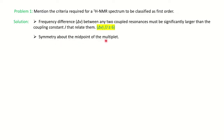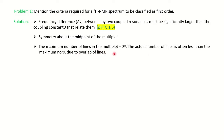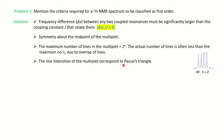The second point is symmetry about the midpoint of the multiplet. Whatever multiplet you are getting, if it has symmetry with respect to the midpoint, it is first order. The maximum number of lines in the multiplet is given by the formula 2^n, but the actual number is fewer due to overlap. For example, when n=2, you expect four lines, but the center two lines merge to give a triplet.